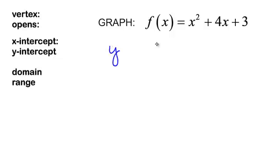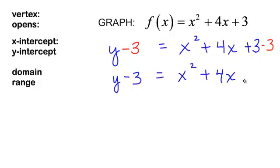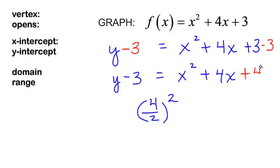I will have y is equal to x squared plus 4x plus 3. I want my x squared and my x terms over here by themselves, so I will subtract 3 from both sides. I will have y minus 3 equals x squared plus 4x. To complete the square, I am adding a special number to make this a perfect trinomial. I take the coefficient of the x term, which is 4, divide it by 2, and then square it — that would be 2 squared, which is 4. So I am going to add 4 to both sides. I now have y plus 1 is equal to x squared plus 4x plus 4.